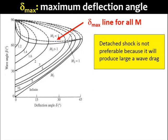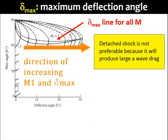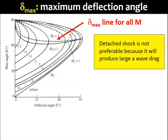From this oblique shock chart, you can see that the larger the Mach number is, the bigger the delta max is.